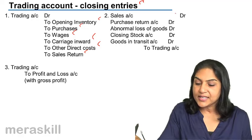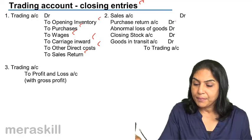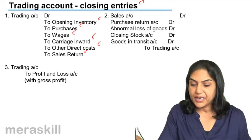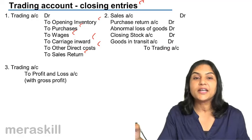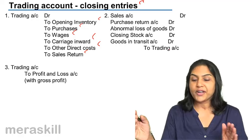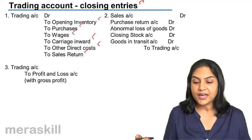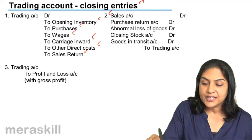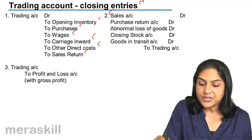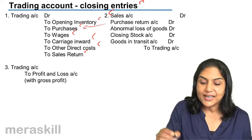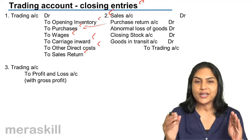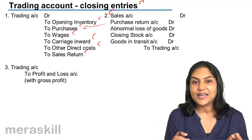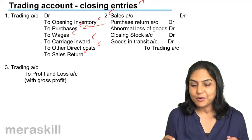Similarly, the sales account is debited, the purchase return account is debited, the abnormal loss account is debited, the closing stock account is debited, and goods in transit account, if any, is debited to the trading account. So what comes on the credit side of the trading account? Sales comes on the credit side. Purchase return is shown as a deduction from purchases, not credited separately, so that at one glance we understand exactly how much is the net purchases.